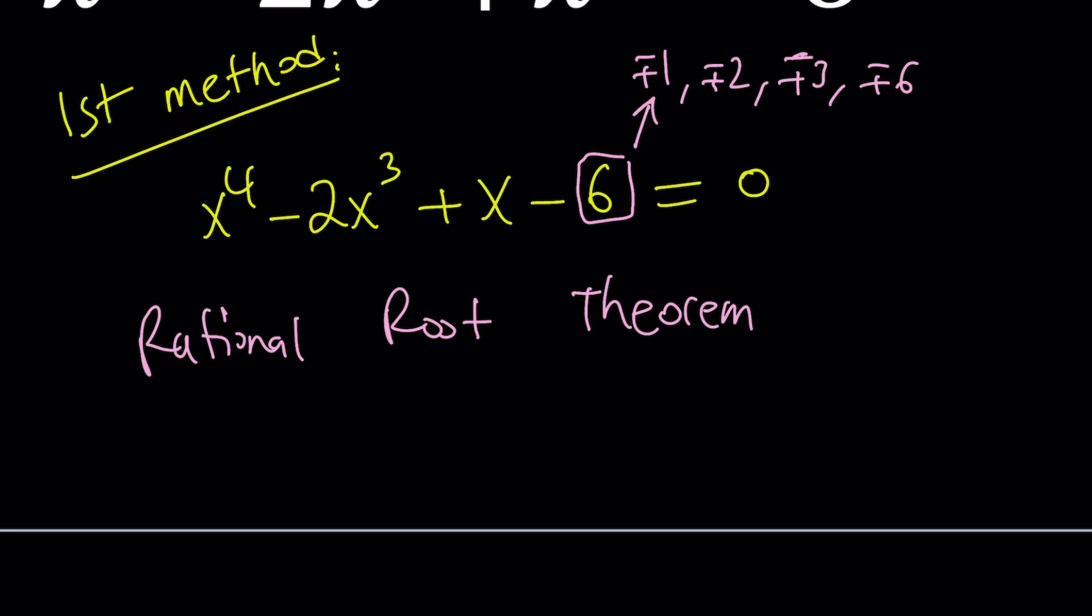Polynomial division, Excel, Wolfram Alpha, whatever you want to try. At some point, hopefully one of these is going to work. Let me test x equals 1. Remember I keep repeating this: when 1 is a solution, that's going to be the sum of the coefficients being 0. In this case, 1 minus 2 plus 1 minus 6 obviously does not equal 0. With negative 1, the evens equal the odds. Again, they are not equal either. So those two failed.